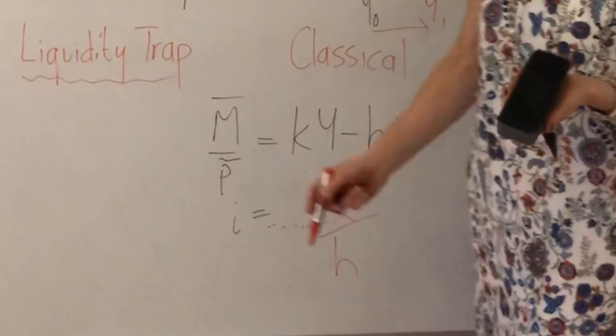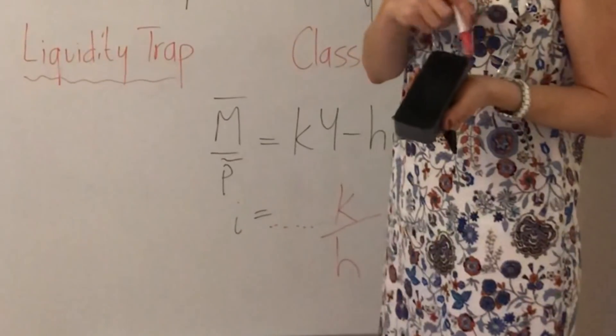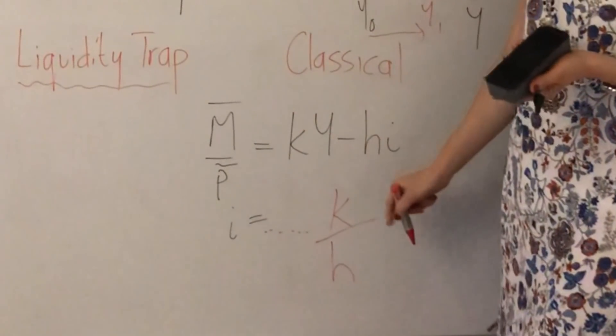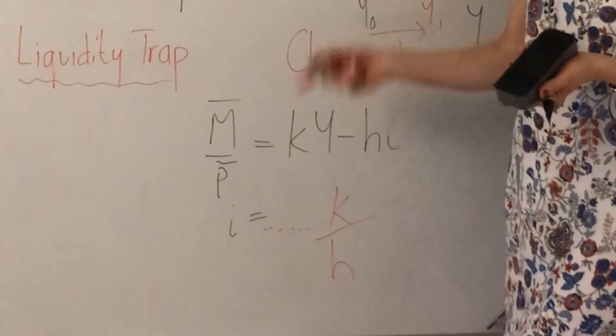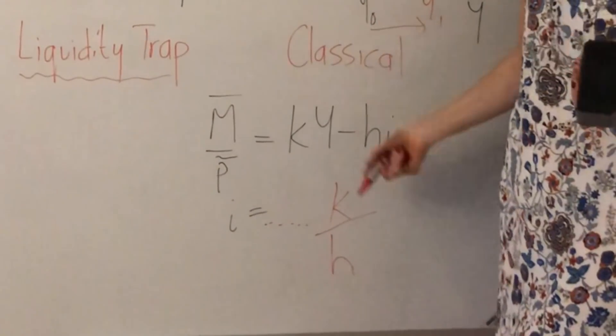What is K? K is the sensitivity of the demand for money to changes in income, whereas H is the sensitivity of the demand for money to changes in interest rate.